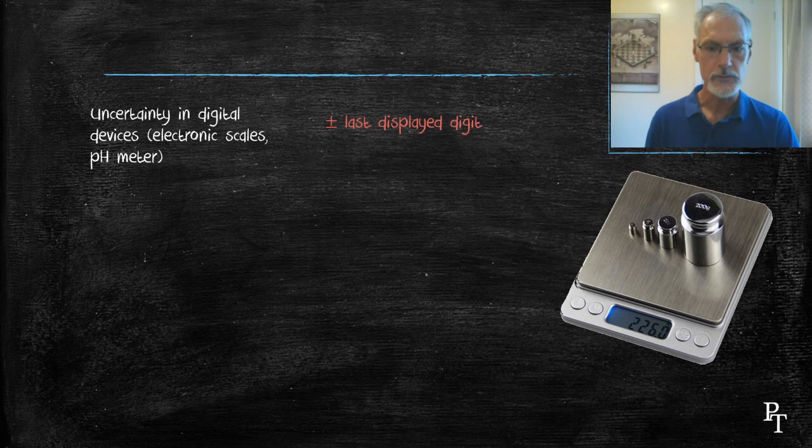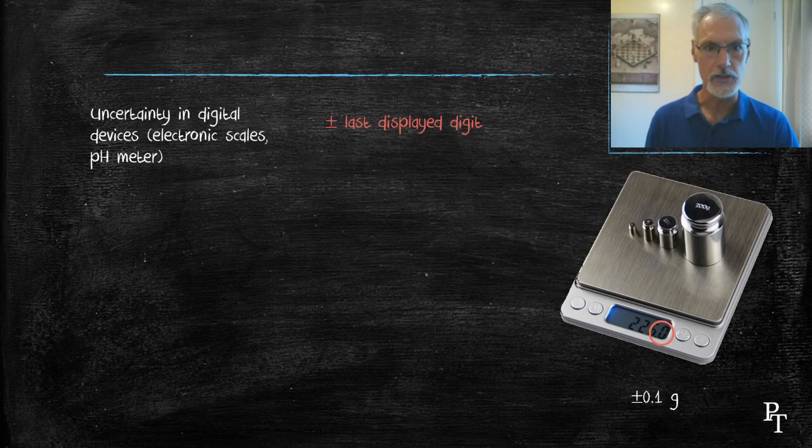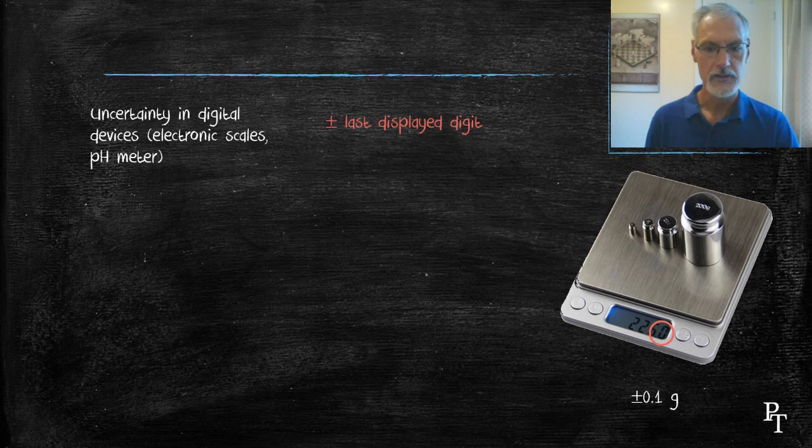So in this case, when I look at the electronic balance, I see that it's good to the tenths column. That means I would record my data to plus or minus 0.01 grams. So the recording I would put down for this device would be 226.0 plus or minus 0.1 grams.